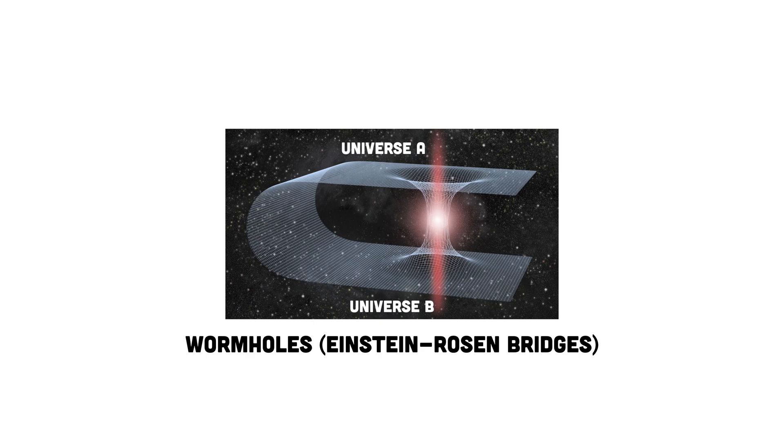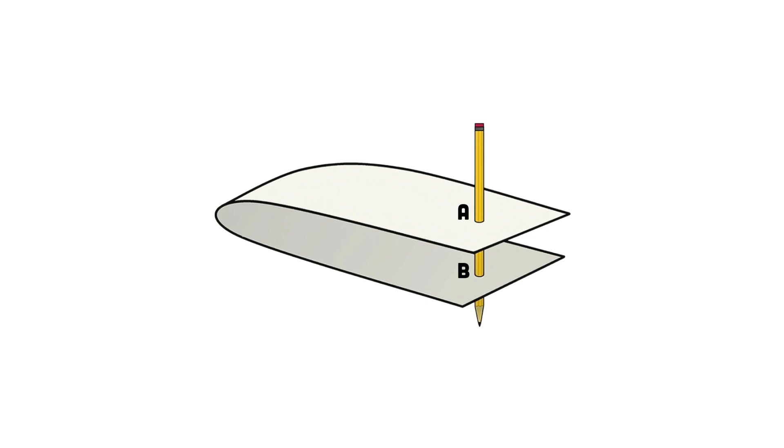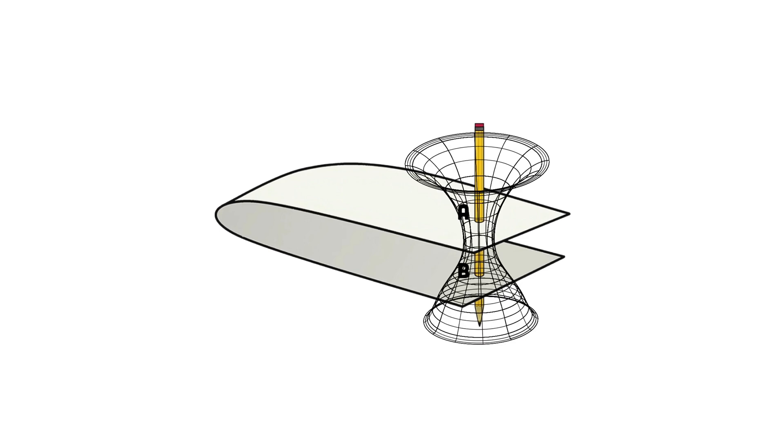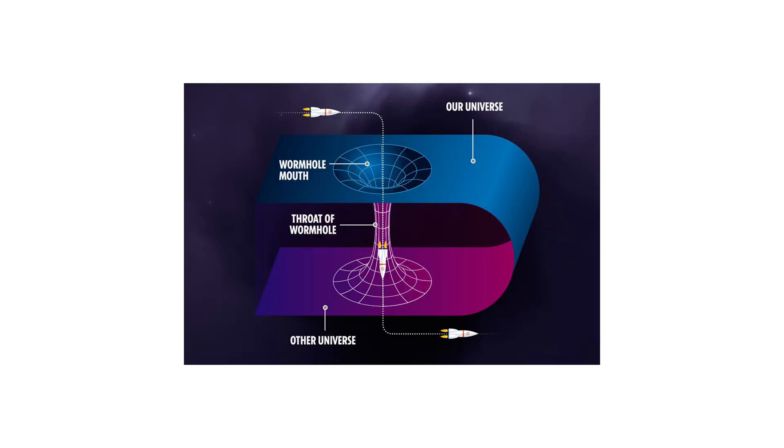Wormholes, also known as Einstein-Rosen bridges, and they're like tunnels connecting two different points in spacetime. Imagine spacetime as a sheet of paper, if you fold that sheet so that two points touch, you could travel between those points by going through the fold instead of traveling along the surface of the paper. That's kind of how a wormhole works, it creates a shortcut through spacetime. So, if we could travel through a wormhole, we might be able to reach a different point in spacetime, potentially traveling to the future, the past, or even another universe.